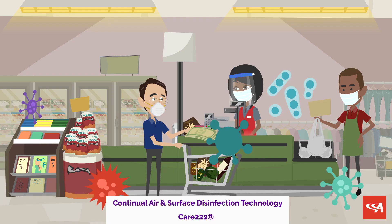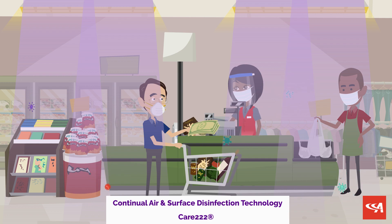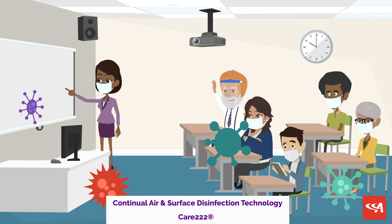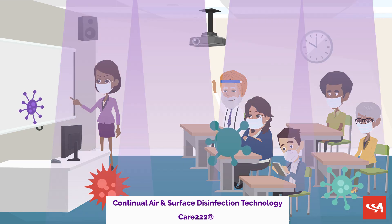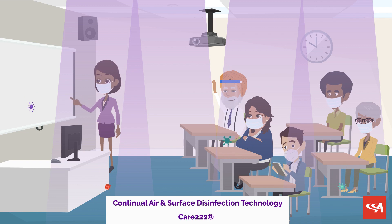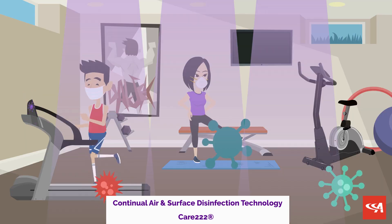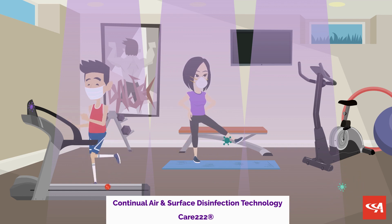Are you looking to treat the air and surfaces while people are present in a space? Try filtered 222 nanometer far UVC powered by CARE 222 technology for continual air and surface pathogen control. This disinfection technology utilizes a 222 nanometer wavelength to reduce the pathogenic bio-burden in the space. Used appropriately, this technology can meet safety guidelines for use while people are present.